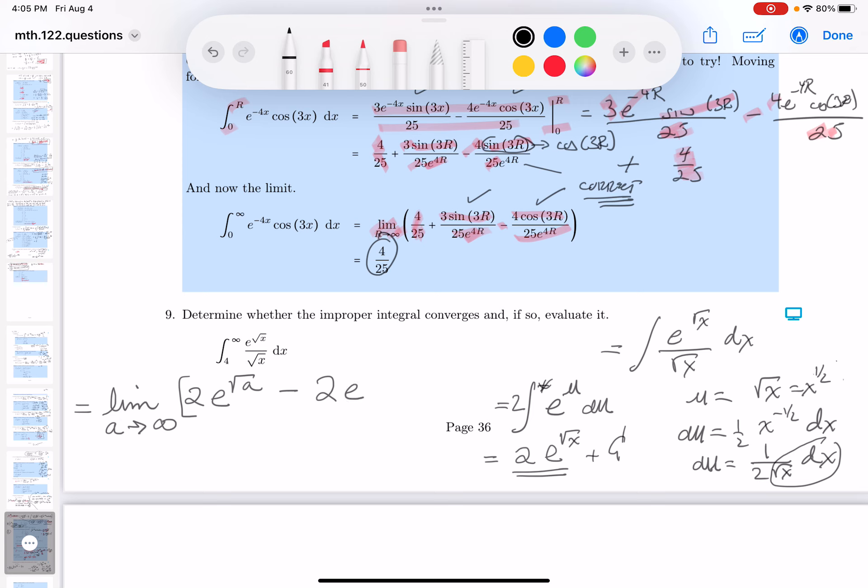And I'm going to evaluate it at 4. Well, the square root of 4 is going to be 2, so it's e squared.